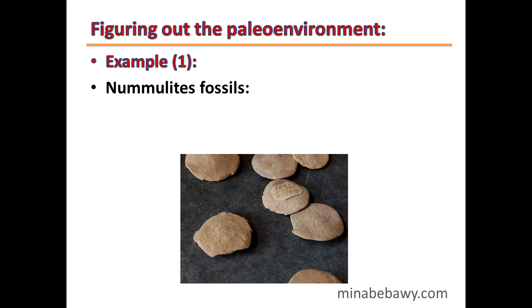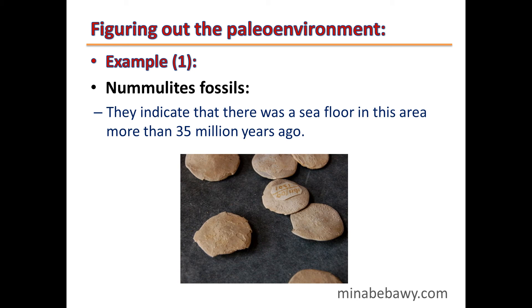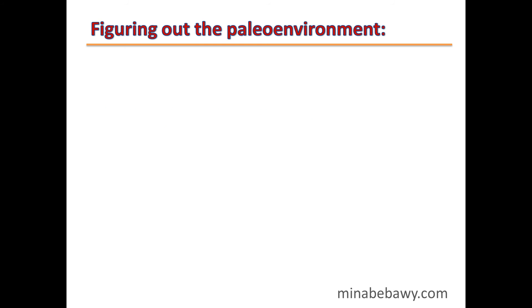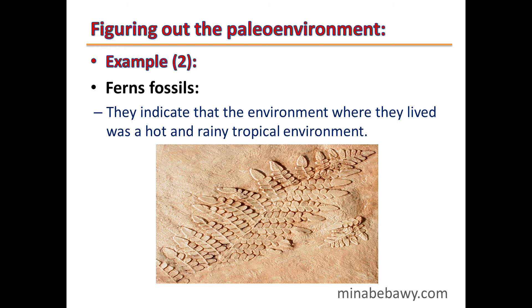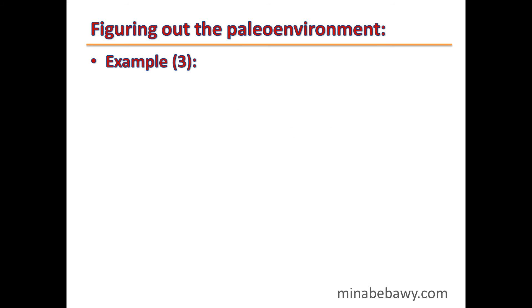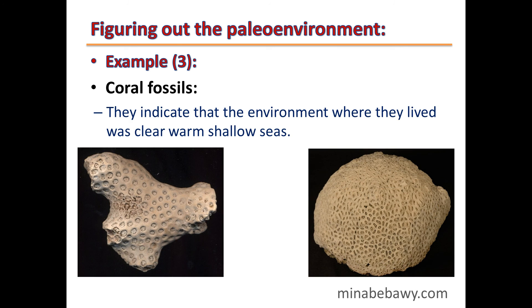Regarding figuring out the ancient environment: Example 1 — nummulite fossils indicate that there was a sea floor in this area more than 35 million years ago. Example 2 — fern fossils indicate that the environment where they lived was a hot and rainy tropical environment. Example 3 — coral fossils indicate that the environment where they lived was clear, warm, shallow seas.